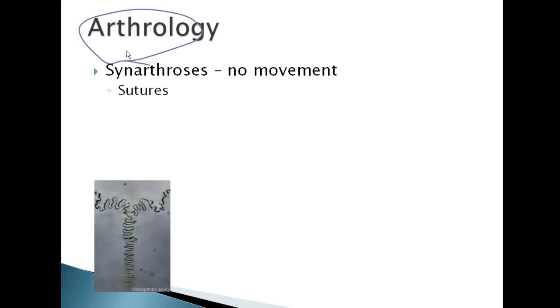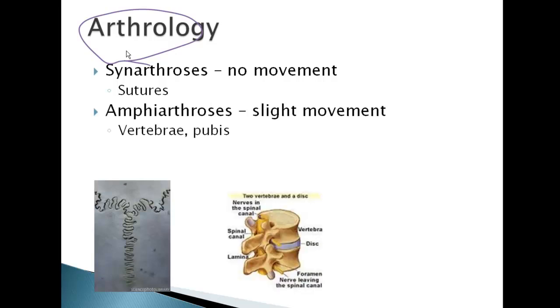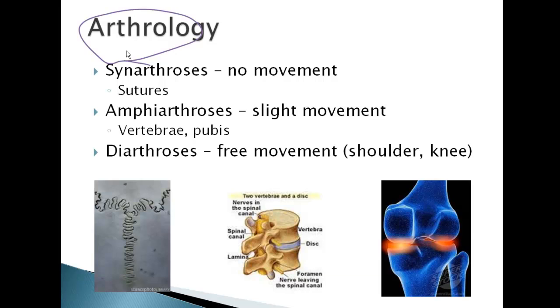As we look at the appendicular skeleton, there are lots of different types of articulations or joints. What we're going to look at now is arthrology, which is the study of those joints — the study of where two or more bones come together. The first are synarthrotic joints, like the sutures mentioned earlier, which allow absolutely no movement. The next are amphiarthrotic joints, which allow for a little bit of movement, like the vertebrae in your backbone and the pubic bone in your pelvic region. The ones studied most often, because they're more injury-prone and allow more movement, are the diarthrotic joints, such as in your knee, elbow, or shoulder.